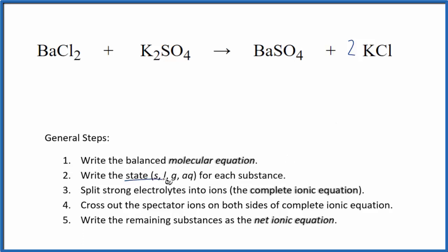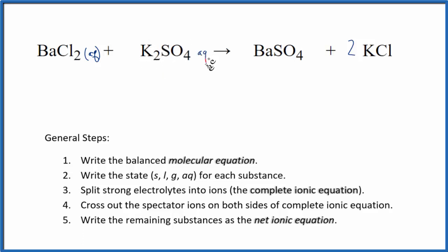Next, we write the states for each of the substances. When we look at barium chloride, chlorides are very soluble, so that should dissolve in water, be aqueous, and split apart into its ions. Potassium sulfate — sulfate is usually soluble and we have potassium, a group 1 metal, so we would expect that also to dissolve completely, to be a strong electrolyte.